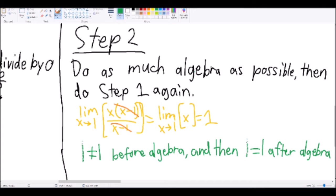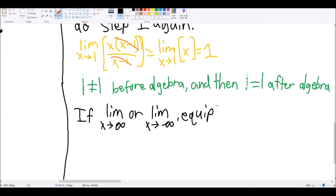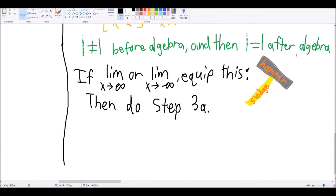If you still find yourself with a situation where you're dividing by 0, proceed to step 3. Step 3. If your limit is approaching infinity or negative infinity, this step should be about breaking out the sledgehammer, followed by step 3a.